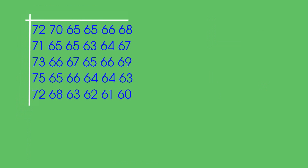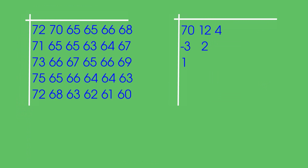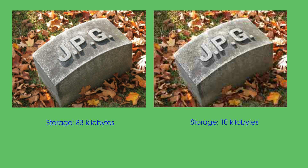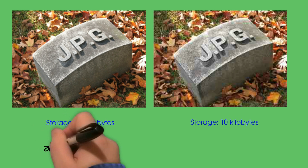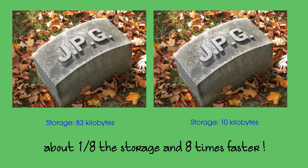So how does JPEG improve this situation? What JPEG does is represent that part of the photo with only a few numbers. Rather than needing all the numbers on the left, we only need a small number of numbers on the right. Because there are fewer numbers, it's quicker to store, takes less memory, and is also quicker to transmit and receive photos.